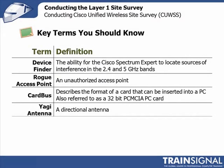A few terms you should be familiar with: the Device Finder - this is one of the modes of operation of the Cisco Spectrum Expert and it's used to help find sources of interference in both the 2.4 and 5 gigahertz bands. A rogue access point is an access point that's not authorized by the enterprise - it operates without the knowledge of the IT department and can cause disruption to the corporate Wi-Fi network.